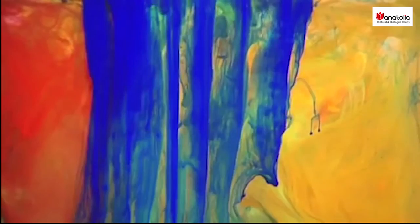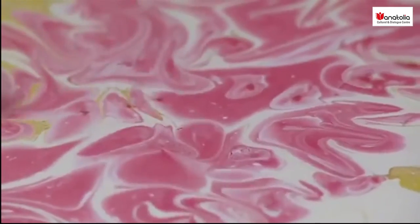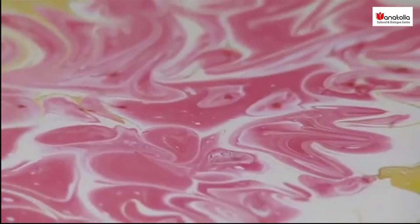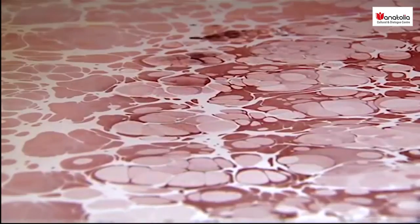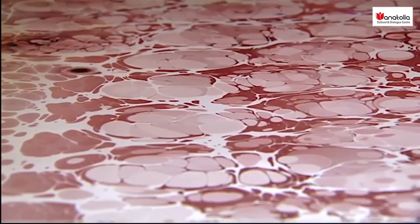The first step in ebru is making the perfect dye. Dyes are created from various organic substances. Soil from Istanbul, white lead, indigo from Pakistan, and red ochre are used to create the ideal color.